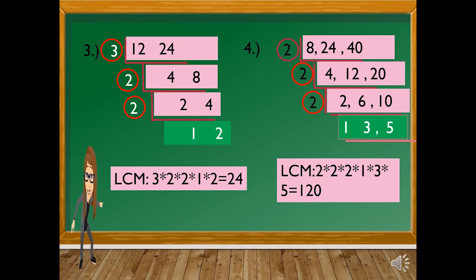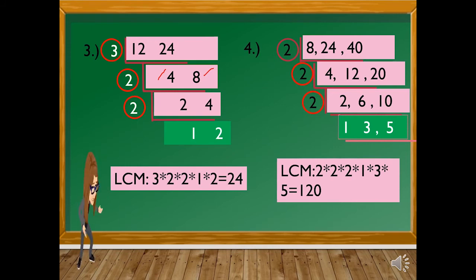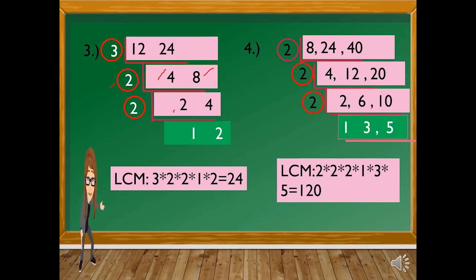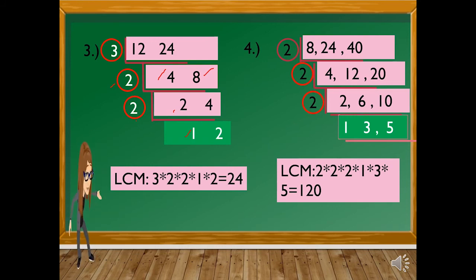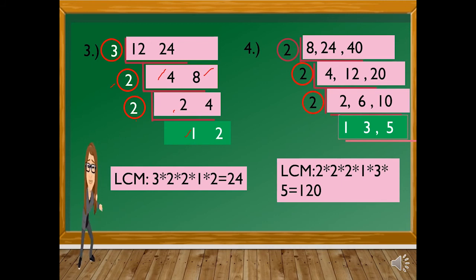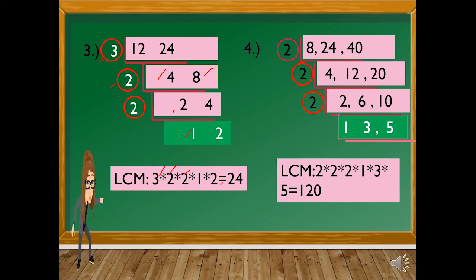For number 3, the common factor for 12 and 24 is 3. So 12 divided by 3 is 4, and 24 divided by 3 is 8. The common factor for 4 and 8 is 2: 4 divided by 2 is 2, 8 divided by 2 is 4. Then 2 and 4 share factor 2: 2 divided by 2 is 1, 4 divided by 2 is 2. The least common multiple is 3 times 2 times 2 times 1 times 2, which equals 24.